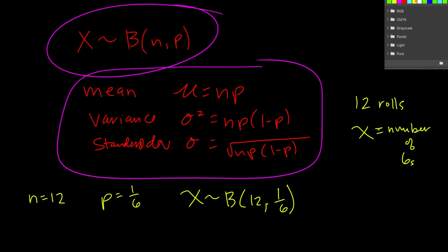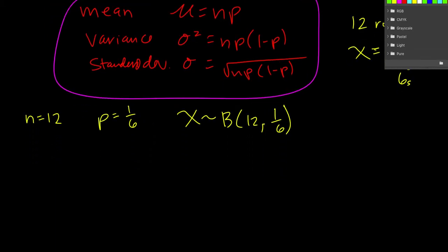Now, given that, if we're looking for the mean, it's right here, it's mu, and it's just n times p. So it's just 12 times 1 sixth, which gives us 12 over 6.